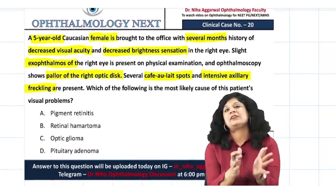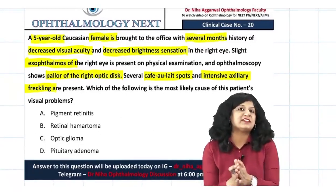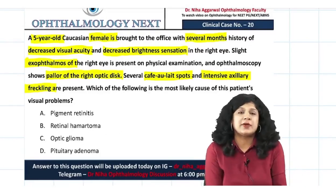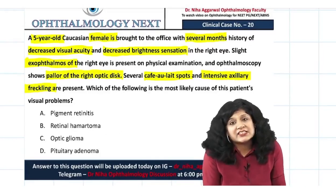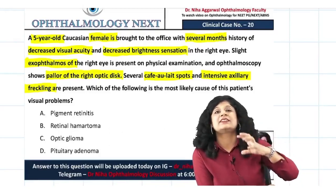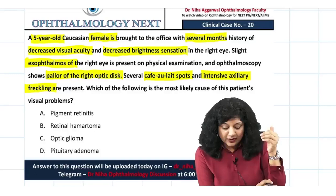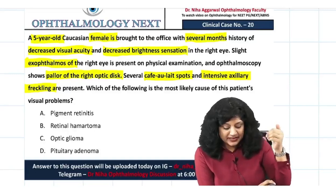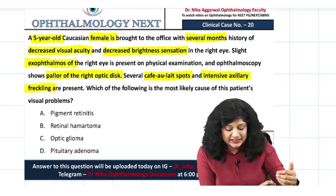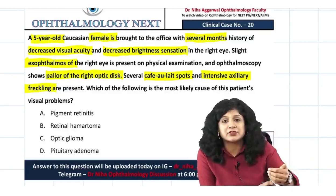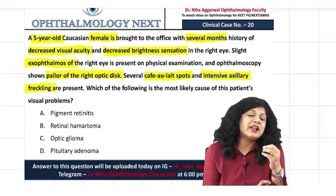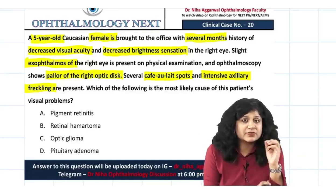Let us summarize the information given in the question. This is a very classical question testing integrated knowledge. We are seeing café-au-lait spots, axillary freckling, decreased visual acuity, decreased brightness sensation, exophthalmos, and pallor of the optic disc. There are so many associated findings.